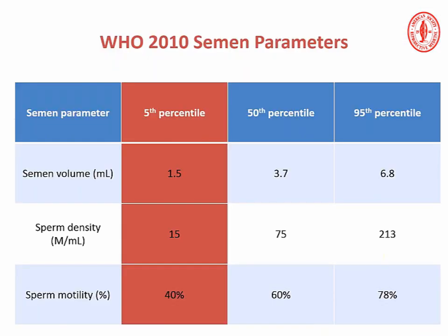Let's review how the WHO came up with these normal values. The WHO took a total of 2,000 couples from three different continents; the only requirement was that these men were able to get their partners pregnant within the last one year. The WHO plotted every semen analysis on a bell curve and decided the fifth percentile would be the norms. At the fifth percentile, semen volume is 1.5 cc, sperm concentration is 15 million per cc, and motility is 40 percent.